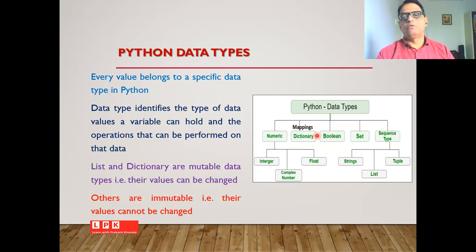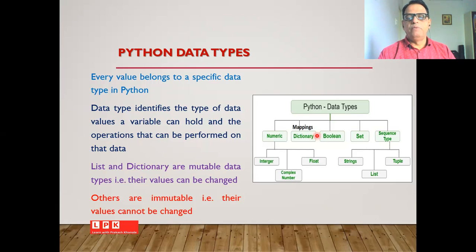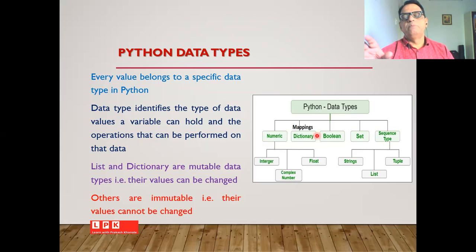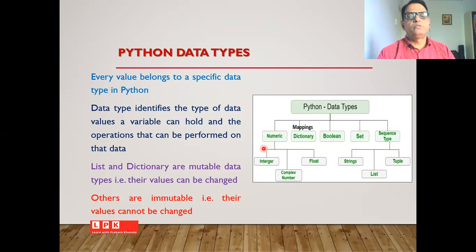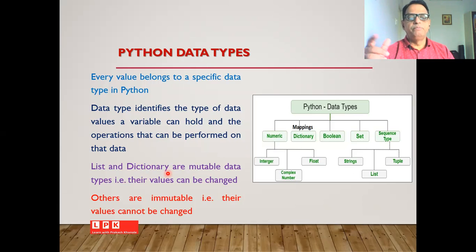In Python we also have a data type called mapping, and in mapping there is currently one data type called dictionary. These are very useful data types. One has to remember that list and dictionary are the mutable data types, meaning their values can be changed.